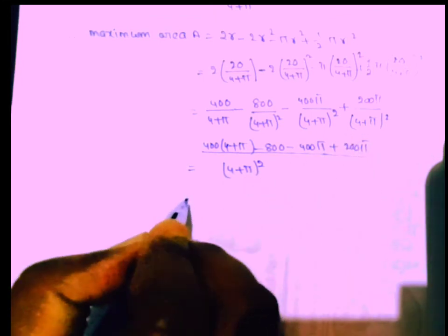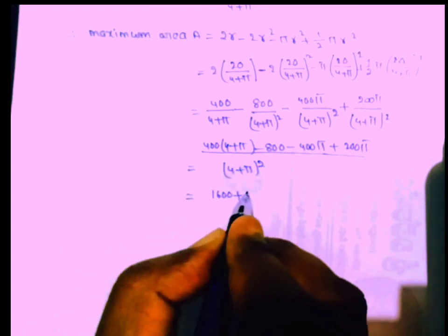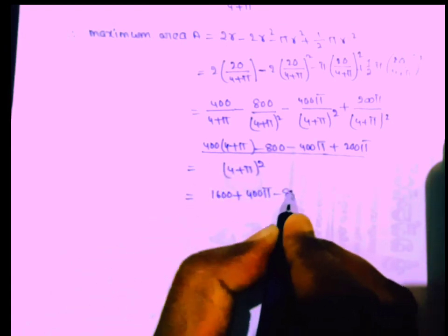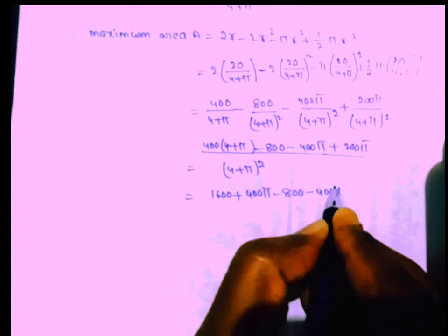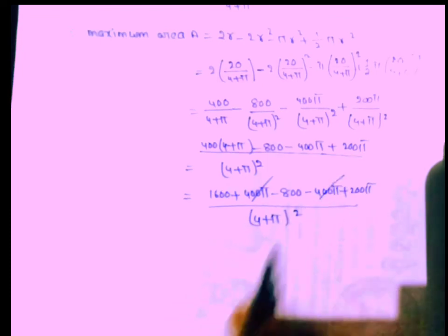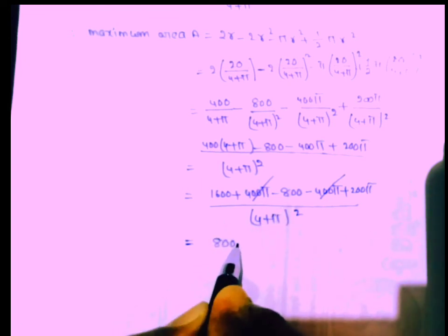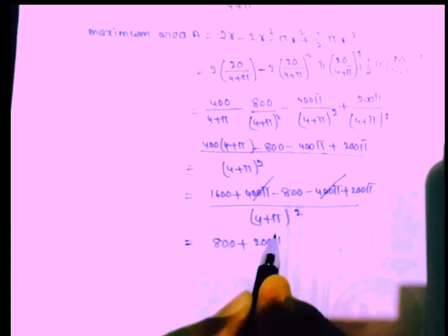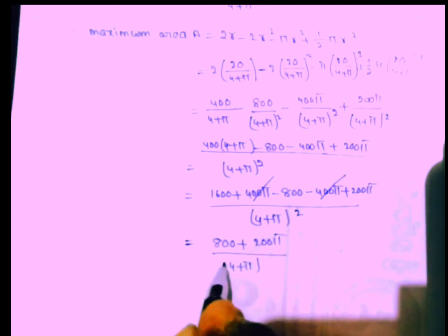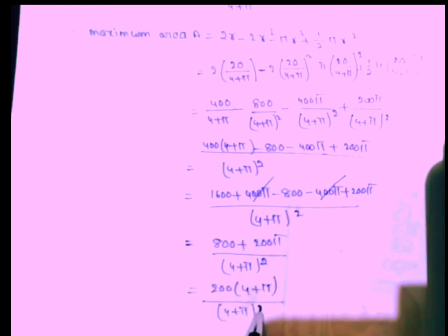Simplifying: 1600/(4+π)² minus 800/(4+π)² minus 400π/(4+π)² plus 200π/(4+π)². The 400π and −400π terms cancel. Remaining: (1600 − 800 + 200π − 400π + 200π) over (4+π)². Taking 200 as common factor: 200(4+π) / (4+π)². Cancelling (4+π): maximum area = 200 / (4+π).